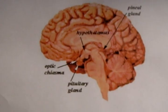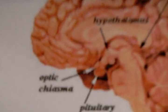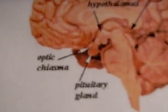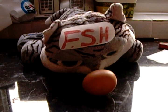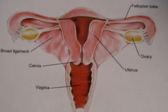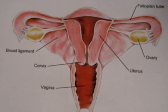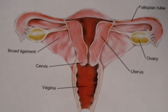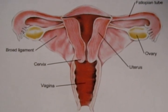FSH is produced in the pituitary gland, just here. It causes an egg to develop in the ovaries. Here are the ovaries, and oestrogen is produced here.